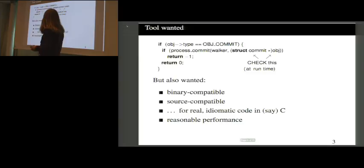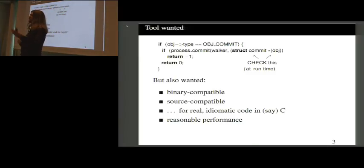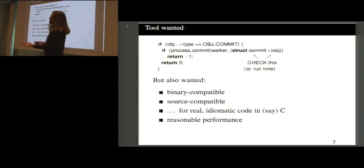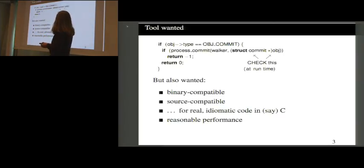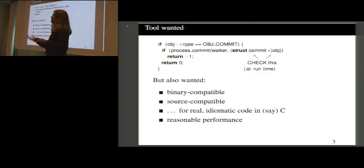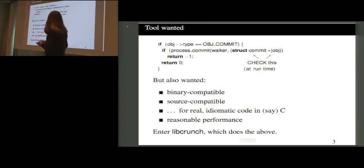The tool I'm describing is called LibCrunch. It checks at runtime that when we make a new pointer of a different type, it really is pointing at a thing of the claimed type. We want it to be binary compatible — no change to data representation at runtime, so libraries don't need recompiling. It should be source compatible, working with idiomatic C code without heavy annotations, and the performance should be reasonable enough to leave turned on during development.